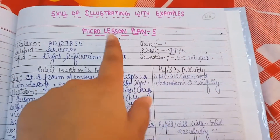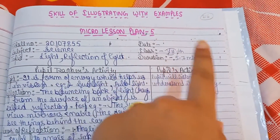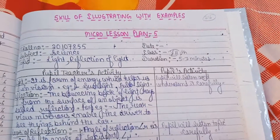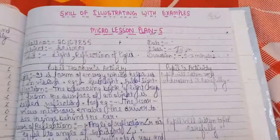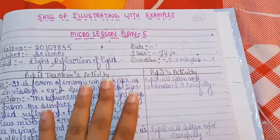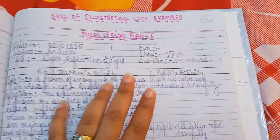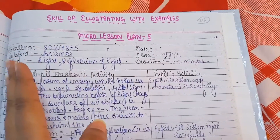Micro lesson plan 5 is the skill of illustrating with examples. So what do we have to do? This is not difficult — we have to continue our two topics which we have seen in the previous video.